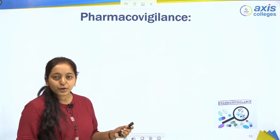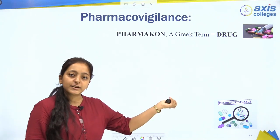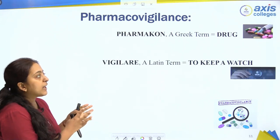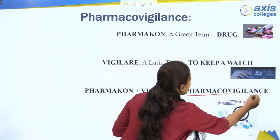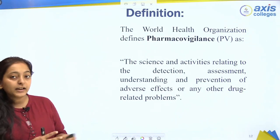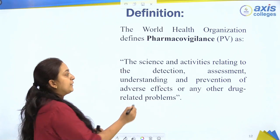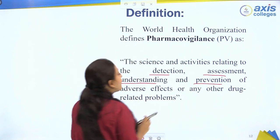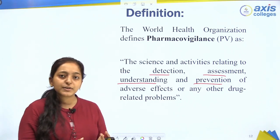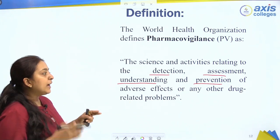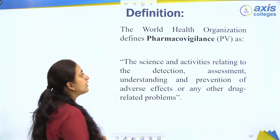Now we start our main topic: Pharmacovigilance. The term is comprised of two parts — 'pharmacone,' a Greek term meaning drug, and 'vigilare,' a Latin term meaning 'to keep a watch on.' Combined, they form Pharmacovigilance. As per the WHO, it is the science and activities relating to the detection, assessment, understanding, and prevention of adverse effects or any other drug-related problems.